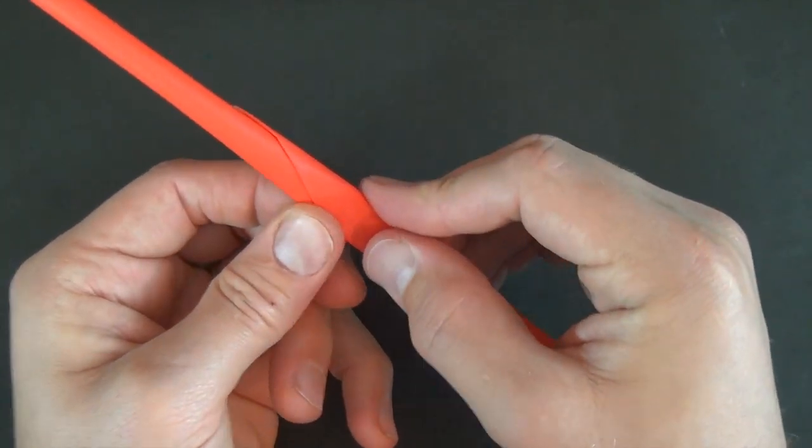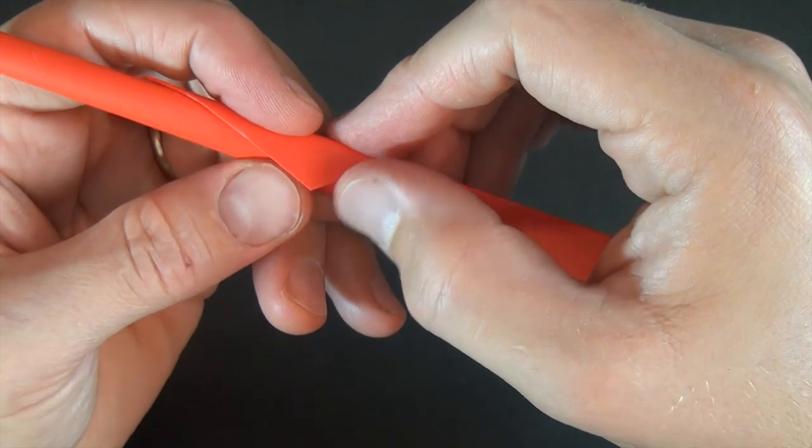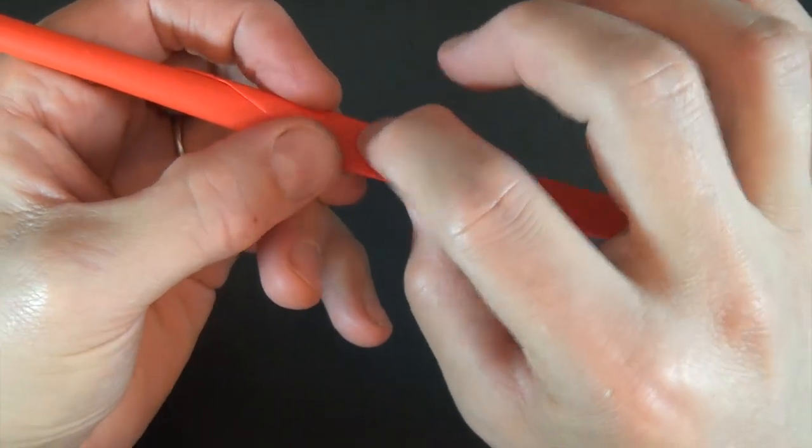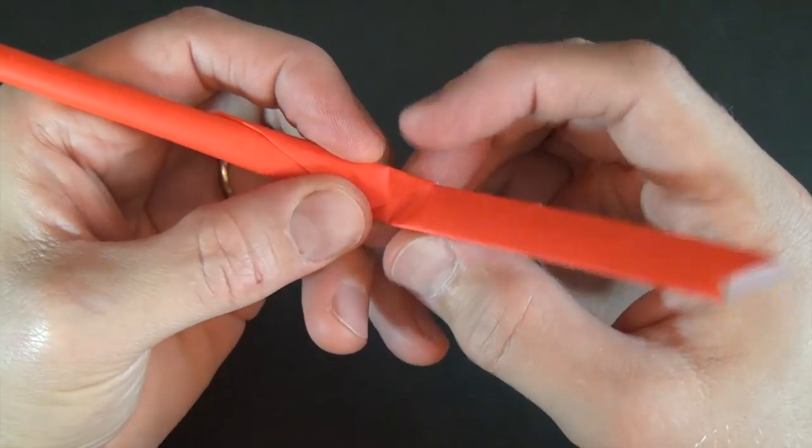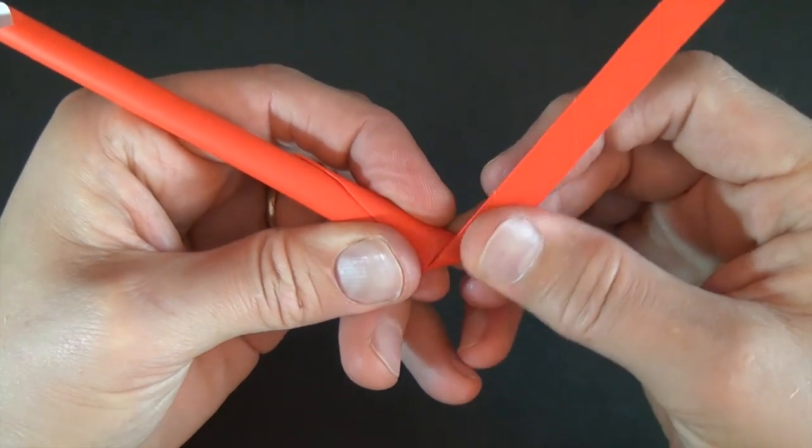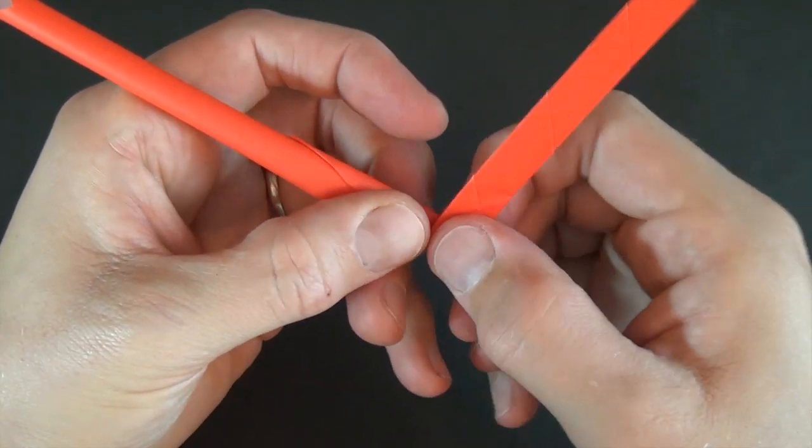Now what you're going to do is see this edge right here? We're going to take this whole flap and fold it right on that edge so that it goes up like that.